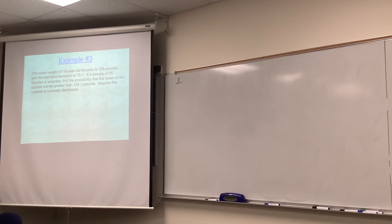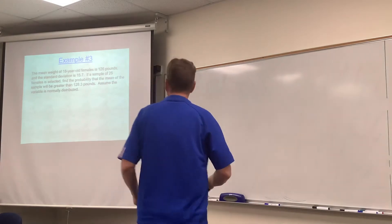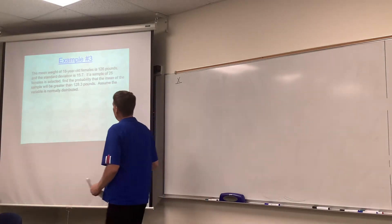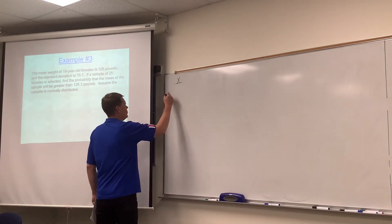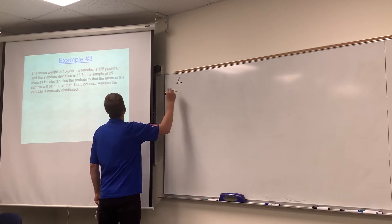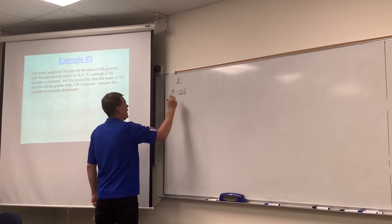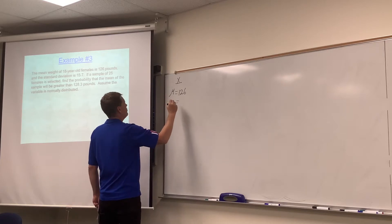We are ready now for the central limit theorem, example number three. So we are told that the mean weight for a certain population is 126 pounds and the standard deviation is 15.7.